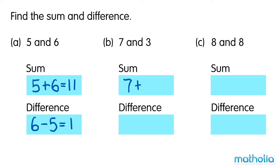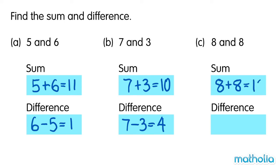7 plus 3 equals 10. The sum is 10. 7 minus 3 equals 4. The difference is 4. 8 plus 8 equals 16. The sum is 16. 8 minus 8 equals 0. The difference is 0.